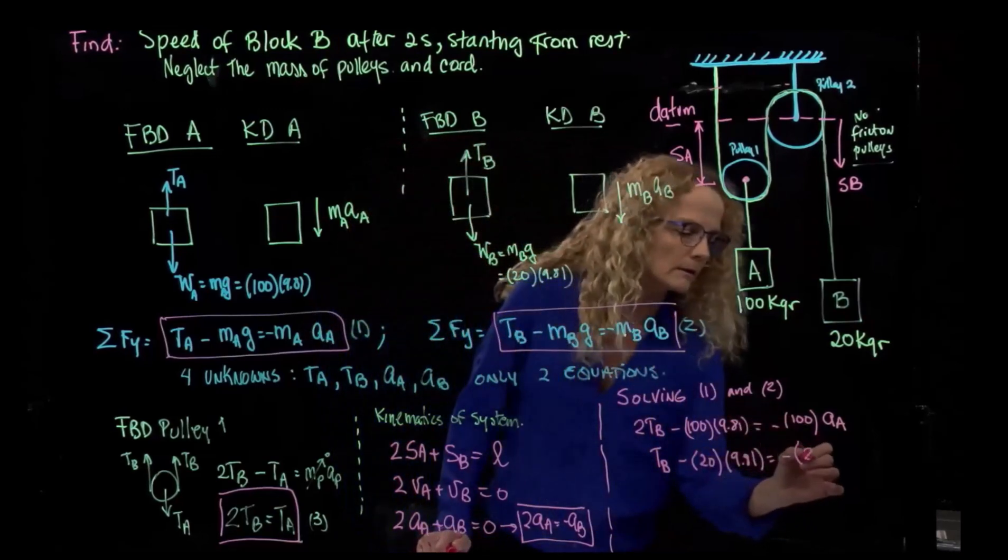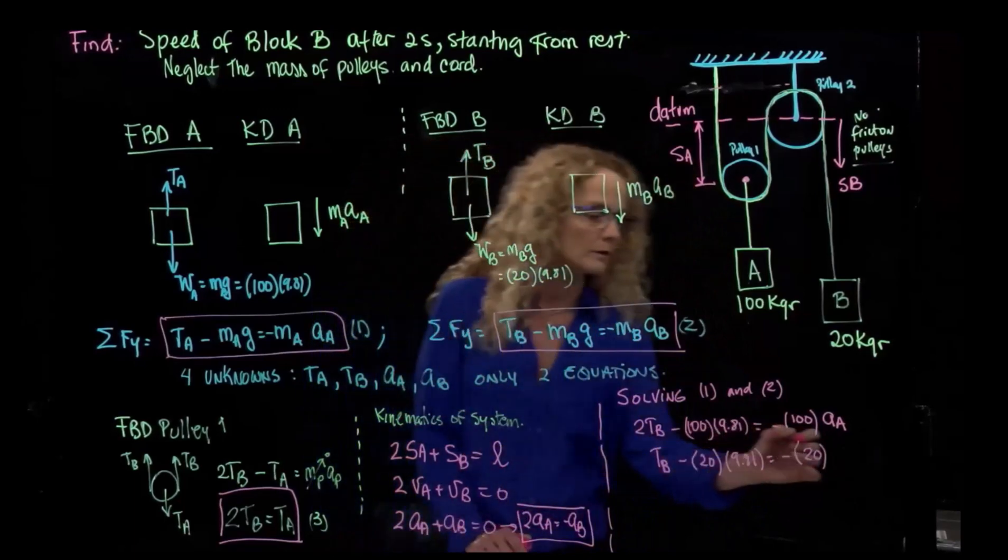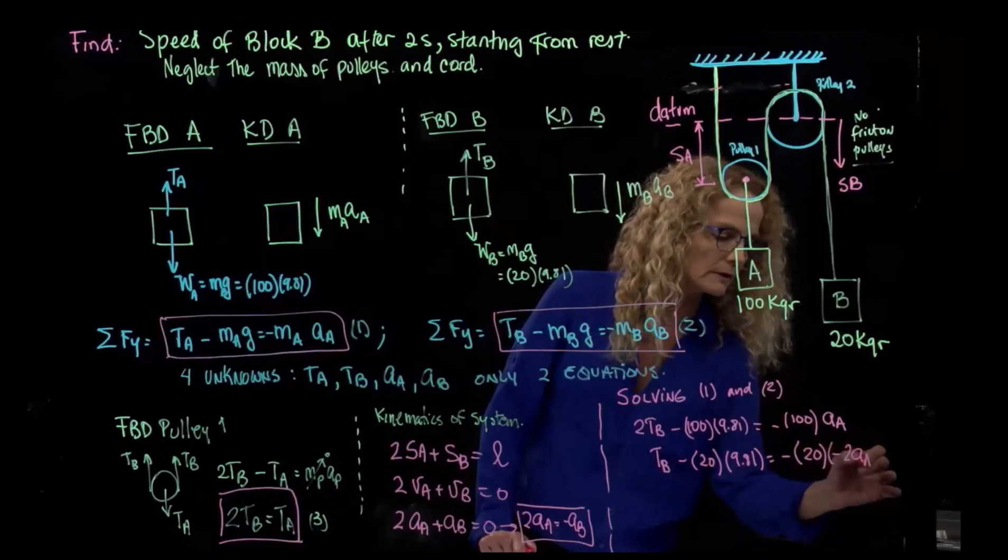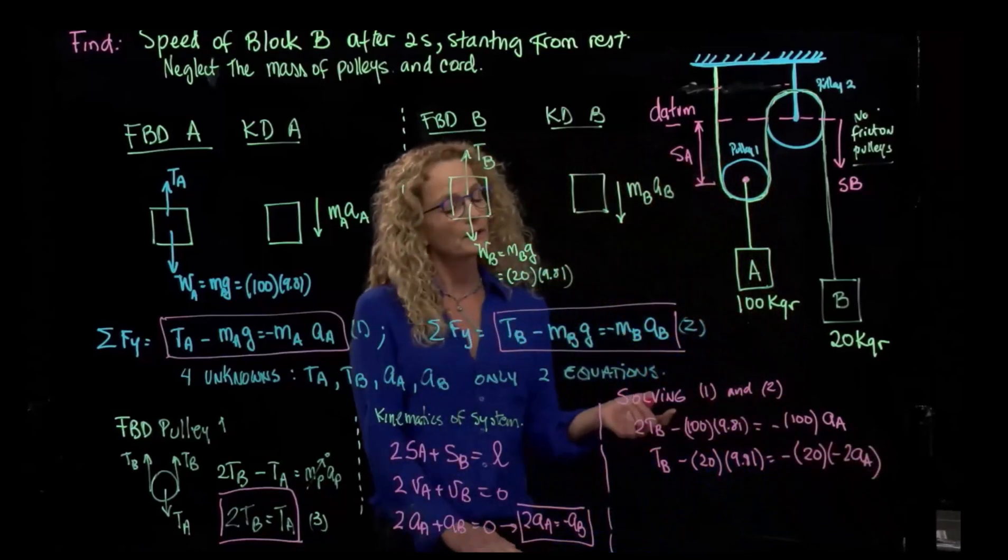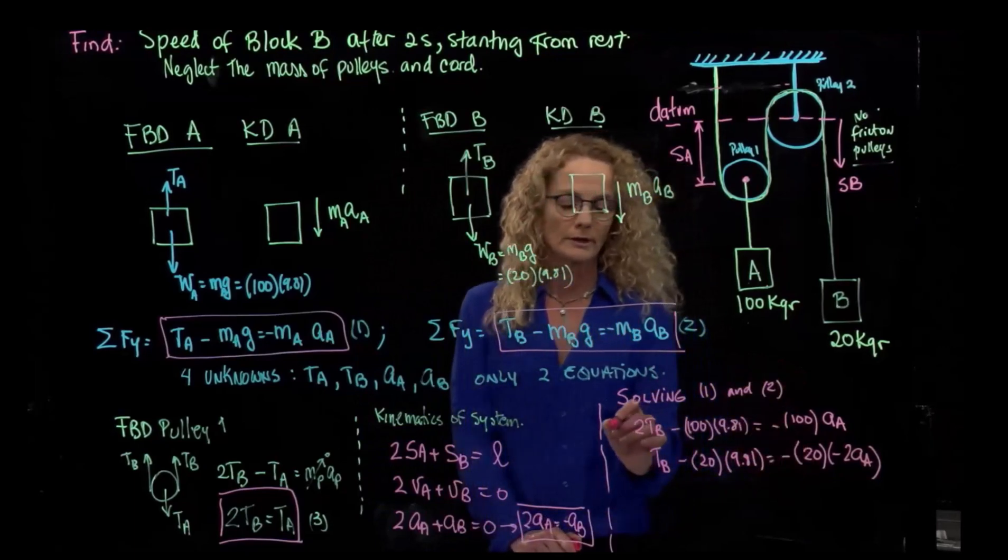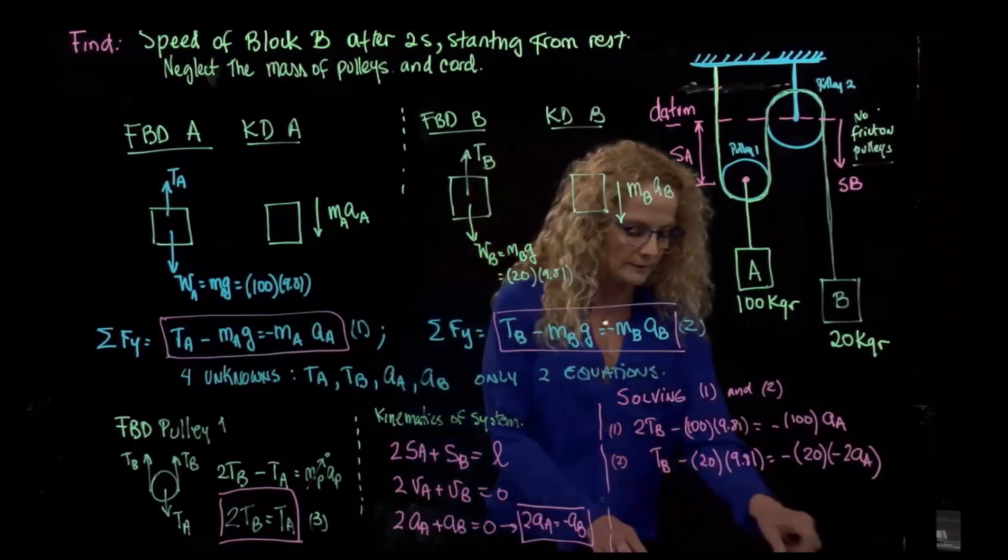So as you see here, we have only two unknowns with two equations, so this becomes my equation one, this becomes my equation two, and solving the system of equations.